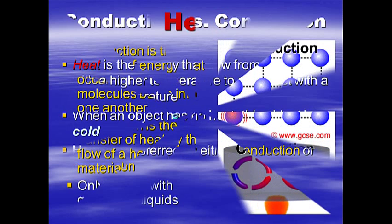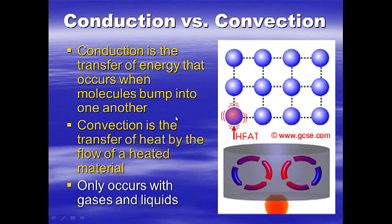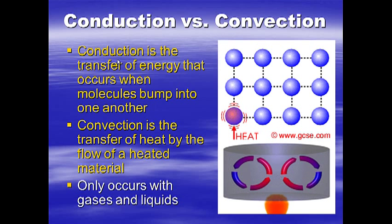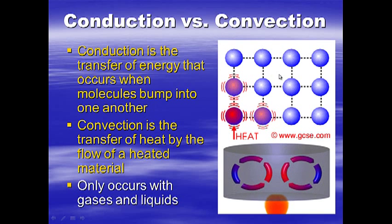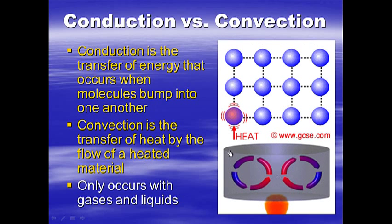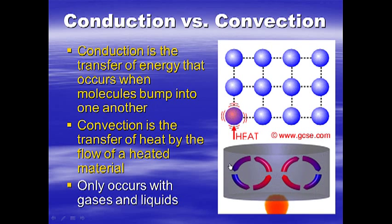Conduction versus convection — what's the difference? Conduction is the transfer of heat that occurs when molecules bump into one another. It occurs with solids, like metals such as a frying pan — when a frying pan heats up, the metal atoms bump into one another and the heat spreads. Convection is the transfer of heat by the flow of a heated material. For example, a flame heats up a metal pan by conduction, but the water inside begins to flow.